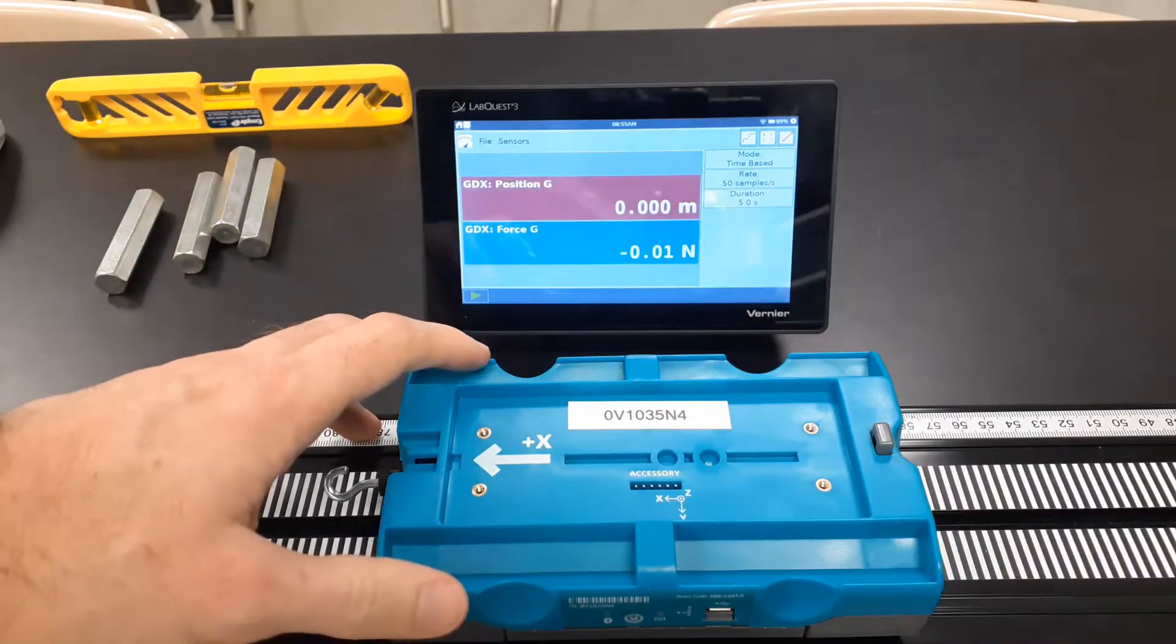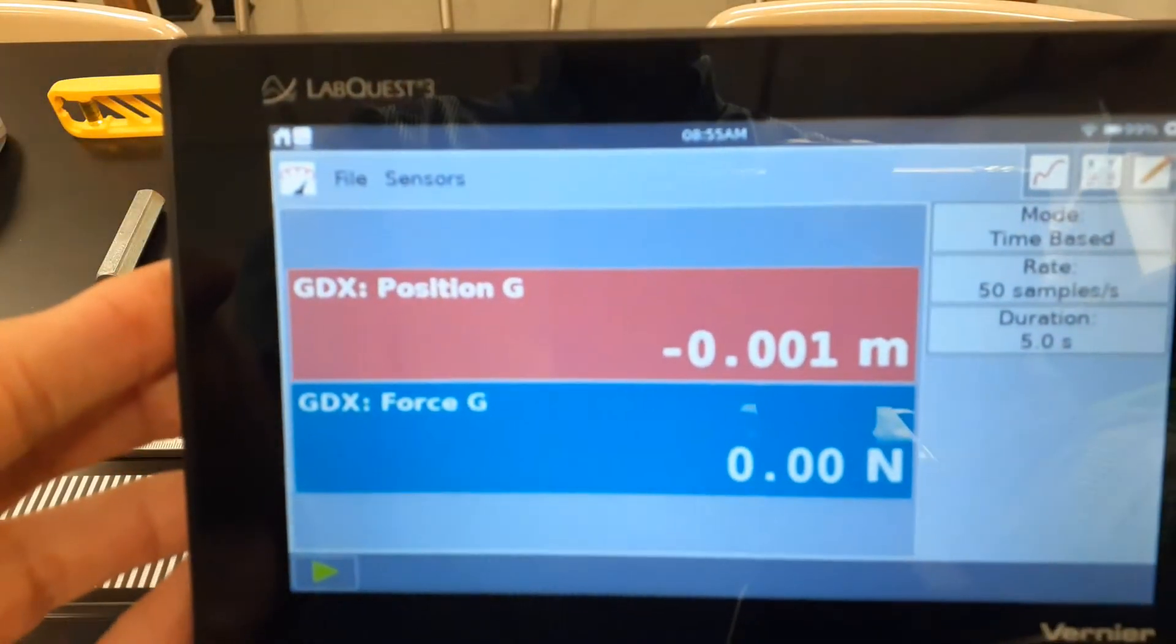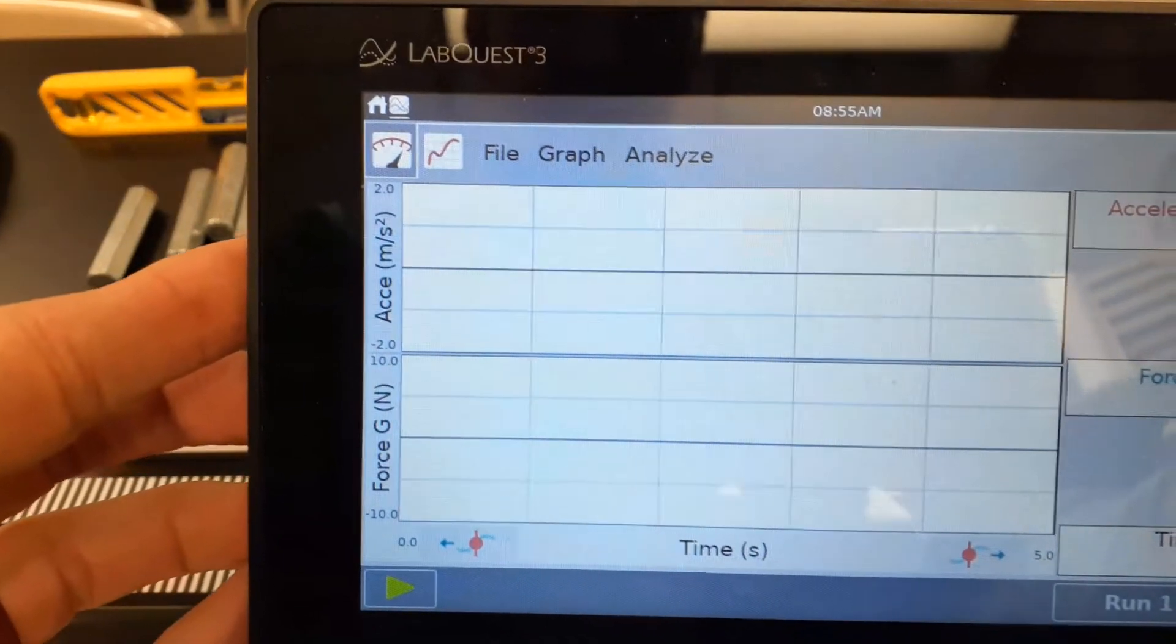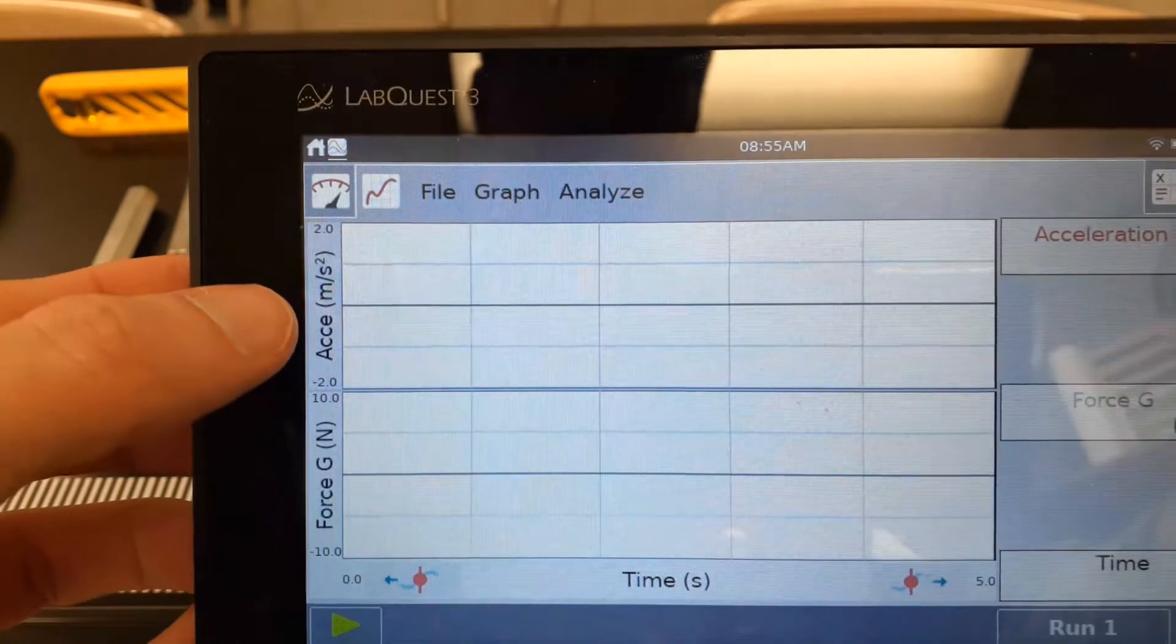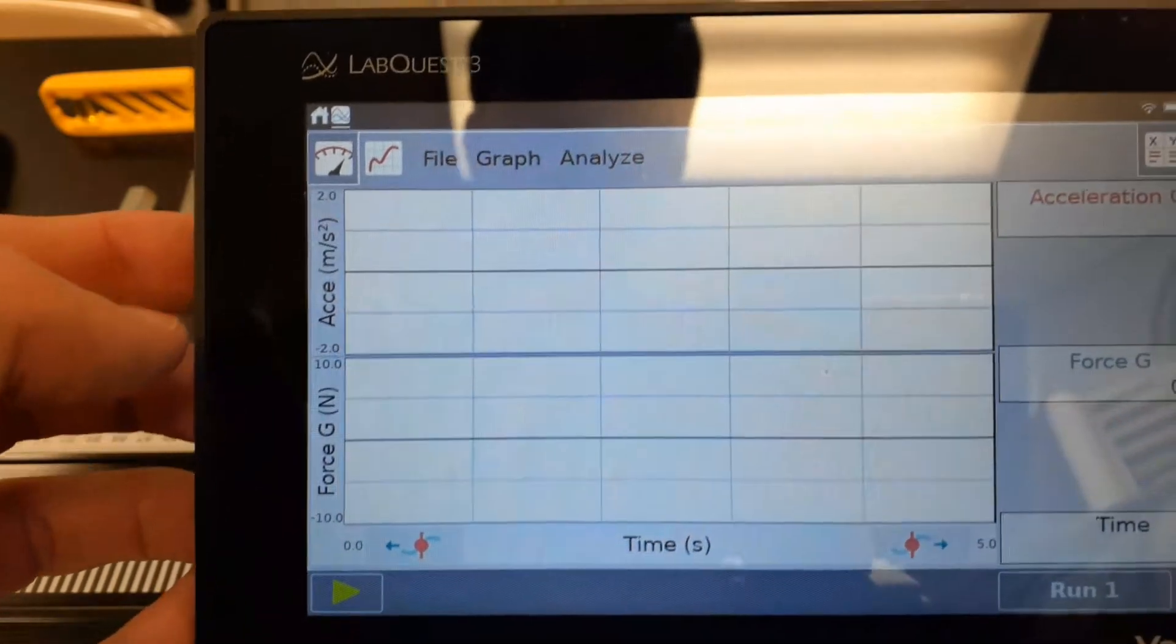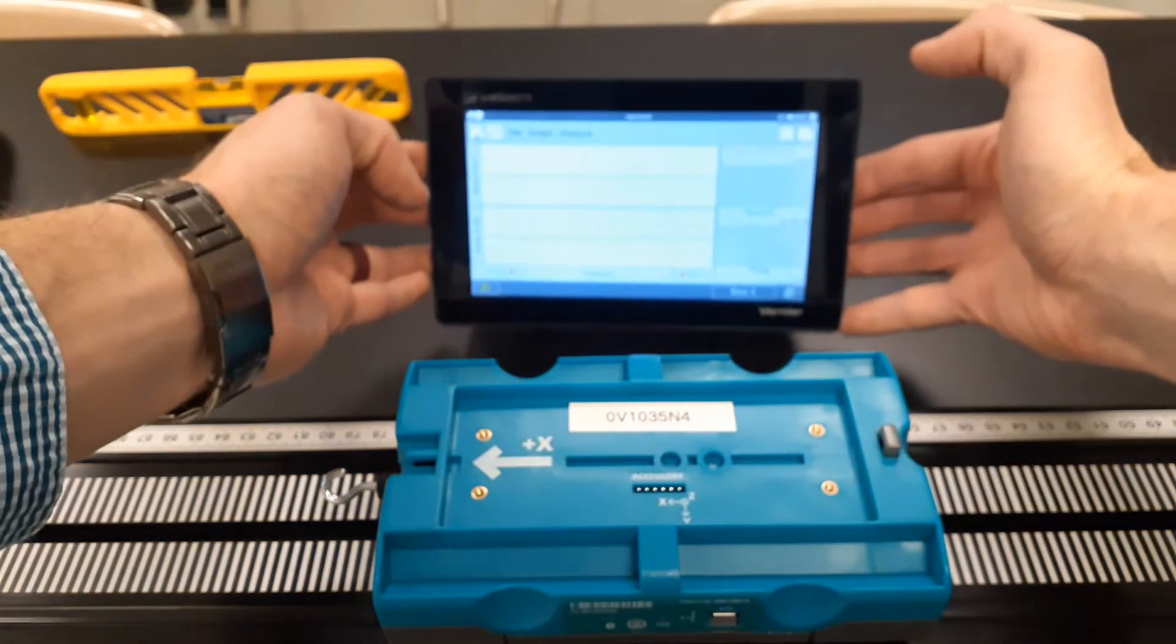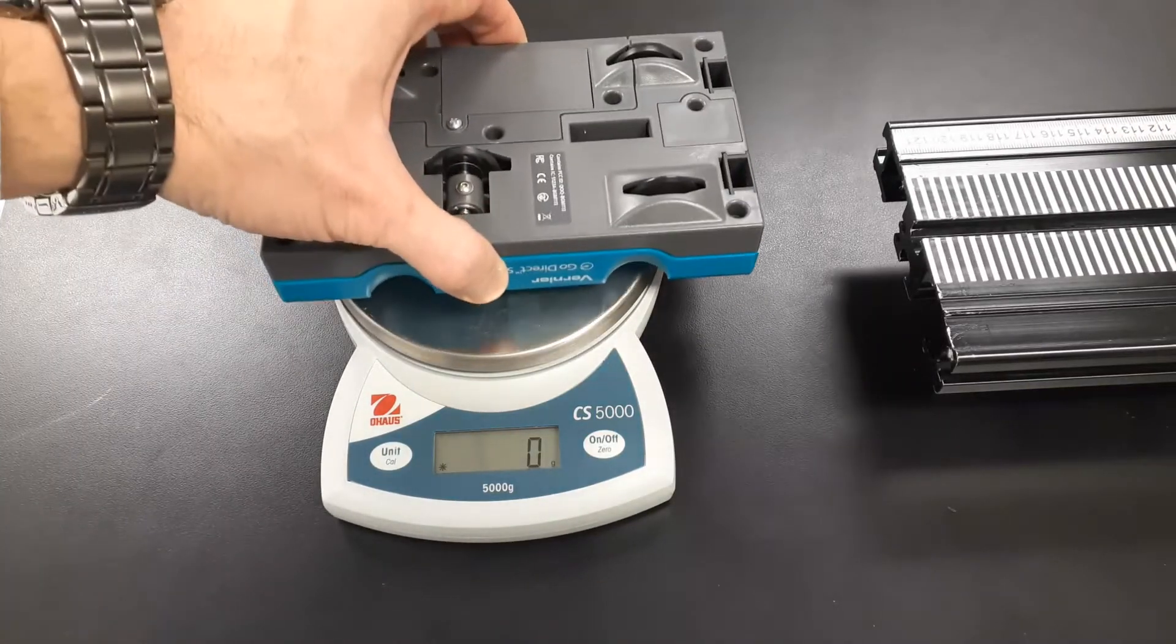So I took this dynamics cart, connected it to this LabQuest so that it is currently set to measure position and force. Now on our graphs, our graph right now, the bottom graph has force versus time. This graph on top, we're looking at the acceleration versus time. And each trial, I will bring this over, show it to you more clearly so that you can see it. And we need to get the mass of this car.